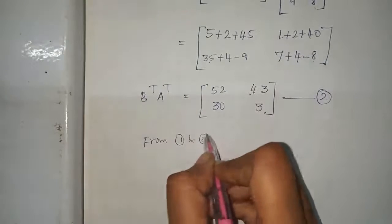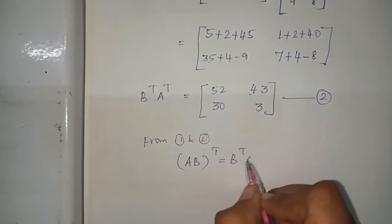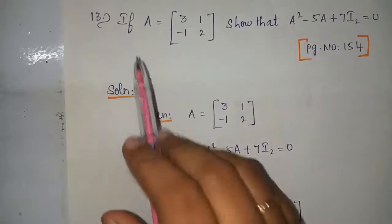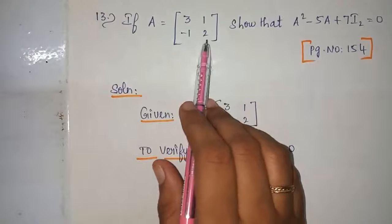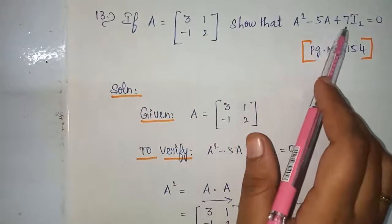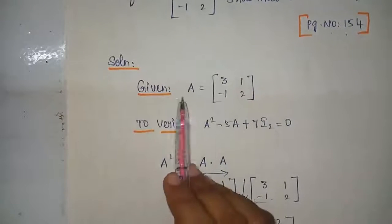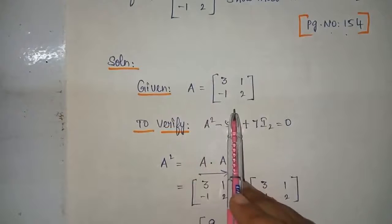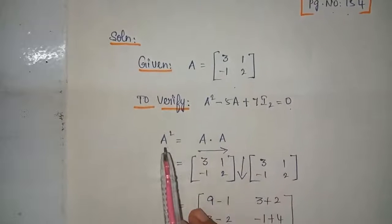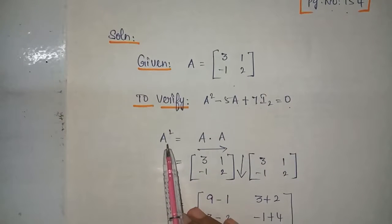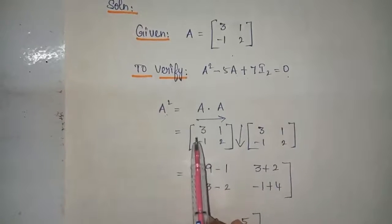Problem number 13, the last problem of this exercise: if A equals 3 1 minus 1 2, show that A squared minus 5A plus 7I₂ equals 0, which is in page number 152. Solution: given A equals 3 1 minus 1 2. First find A squared — that is A into A, matrix multiplication.